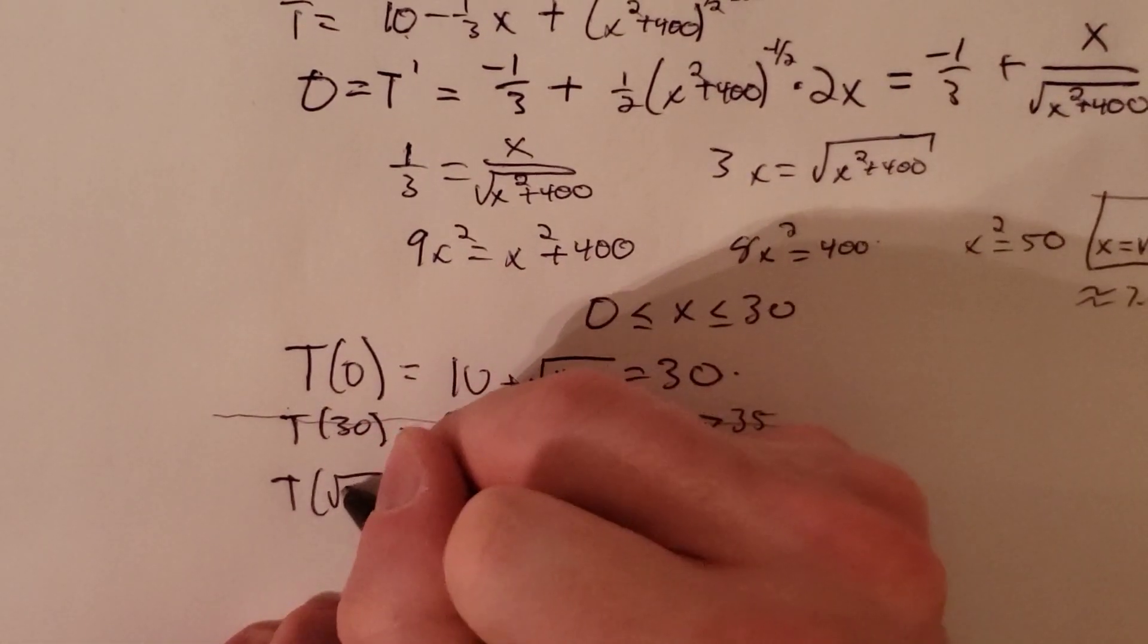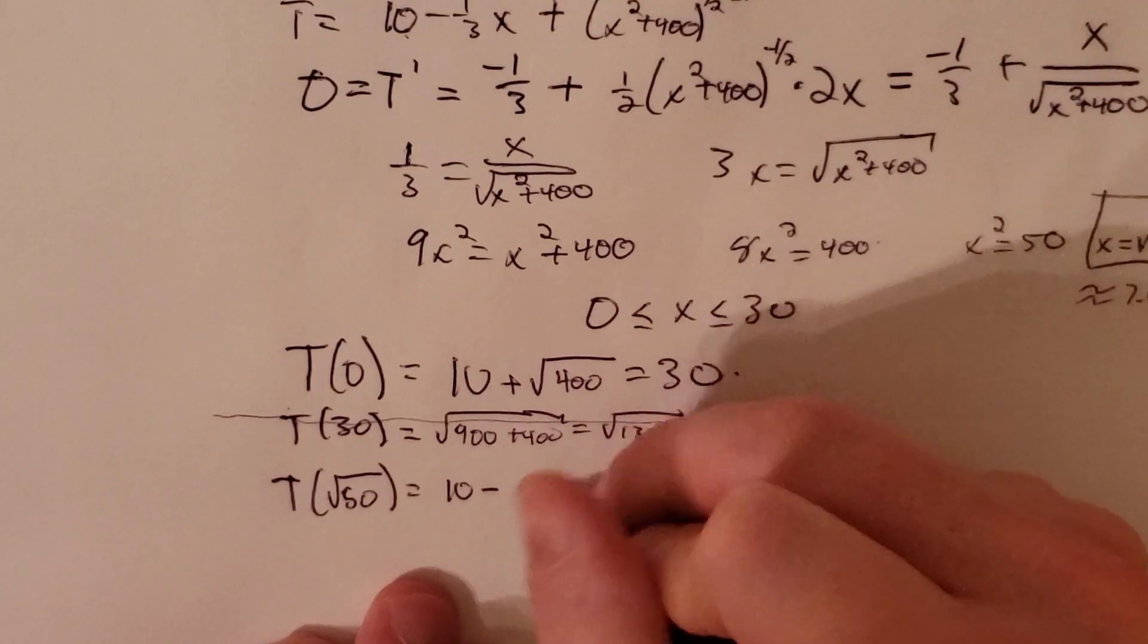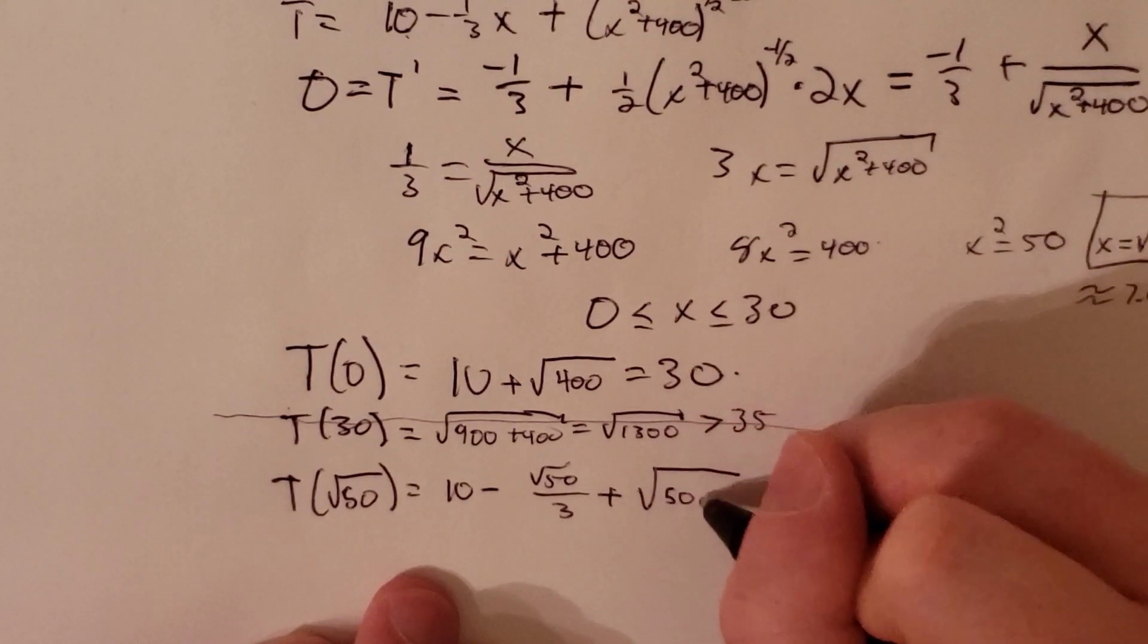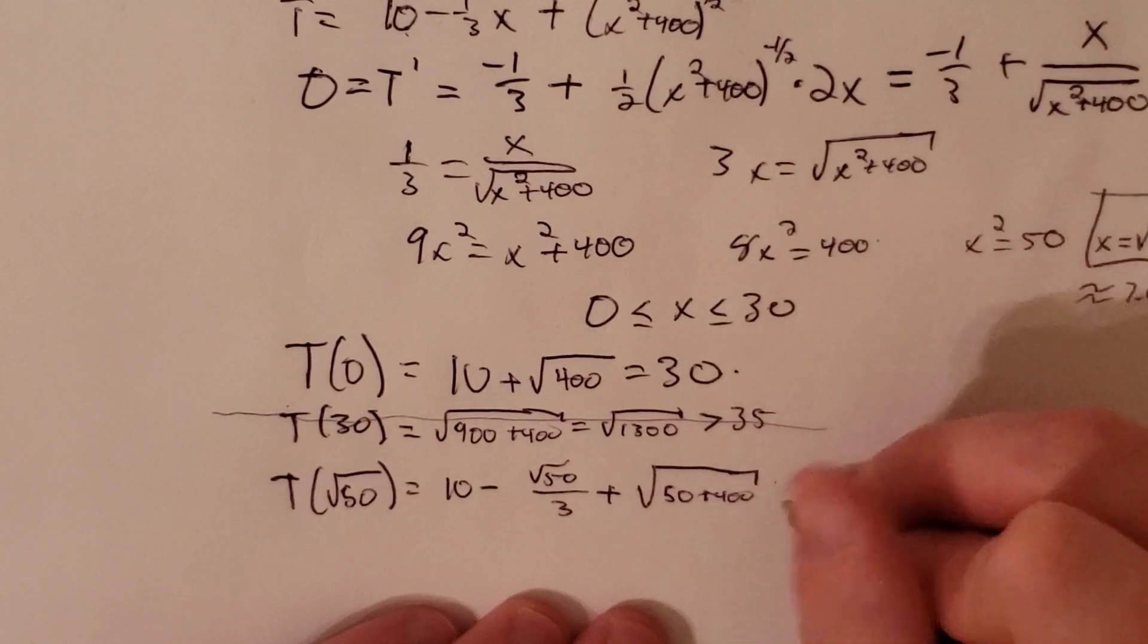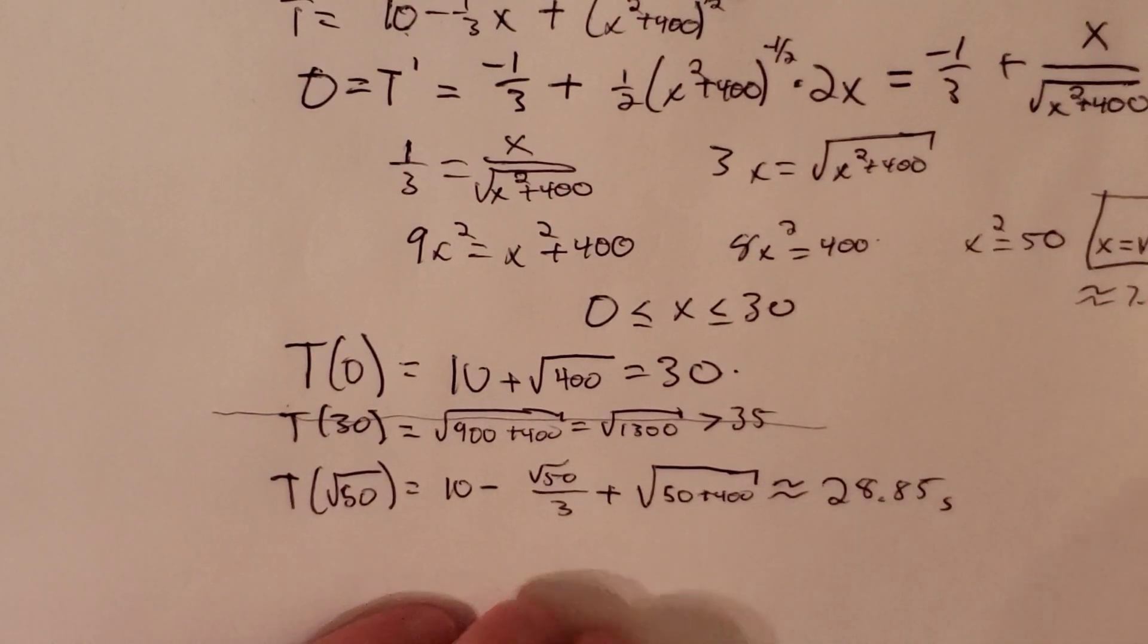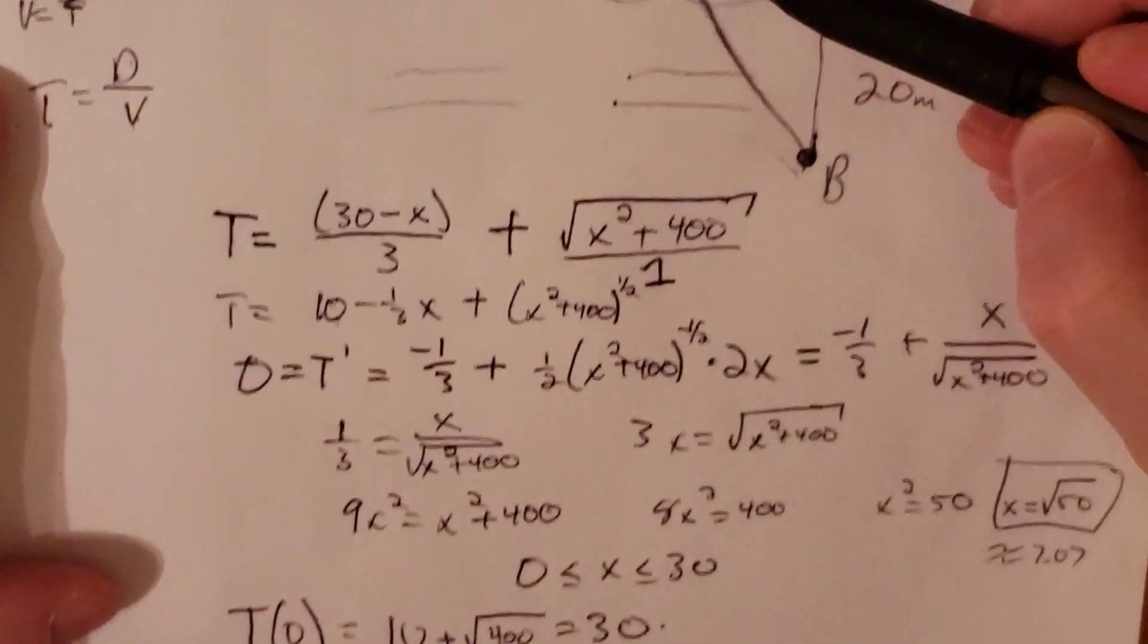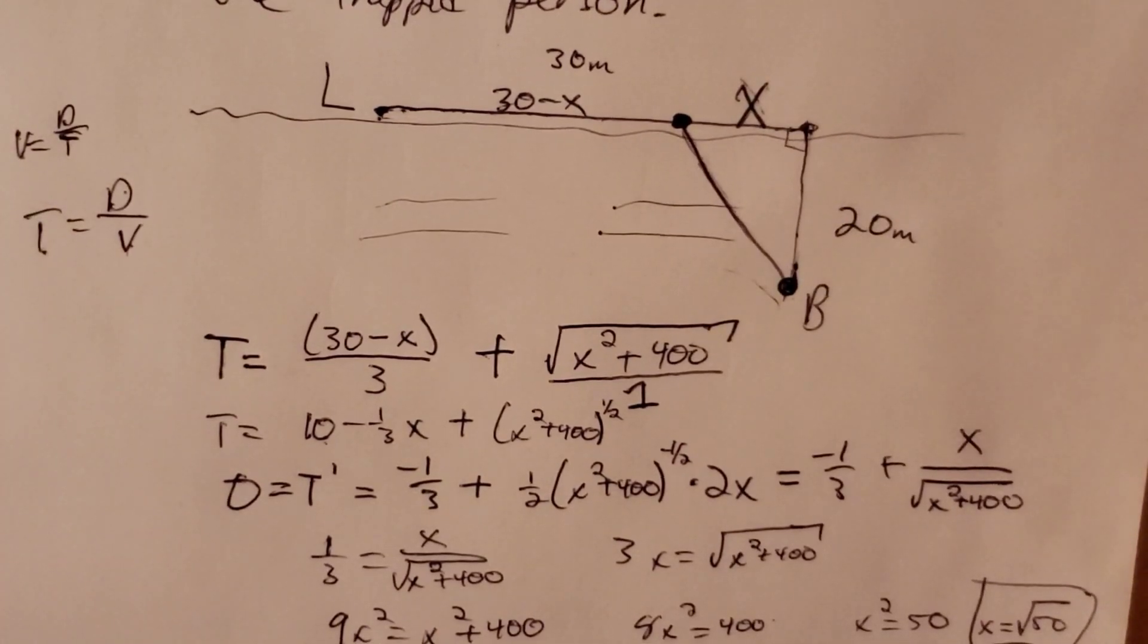And then finally, T of root 50. Well, we plug this into the original function. So this is 10 minus root 50 over 3 plus the square root of root 50 squared. Well, that's just 50 plus 400. And what is that? This is approximately 28.85 seconds. So that will in fact minimize our time. And we can shave off about a second by entering the water a little earlier than directly across from this buoy.